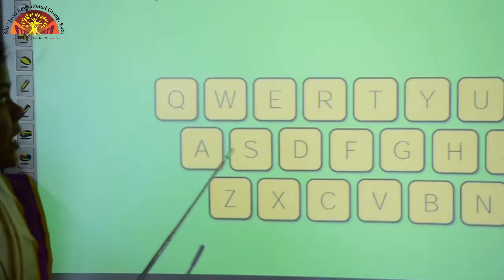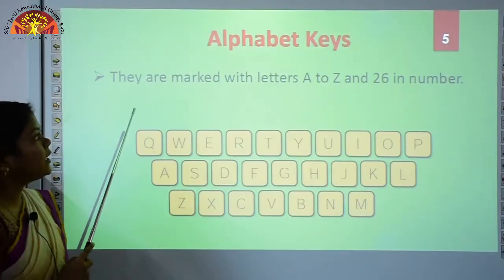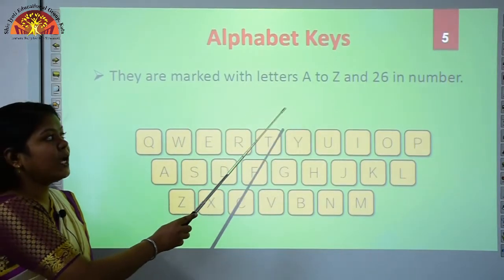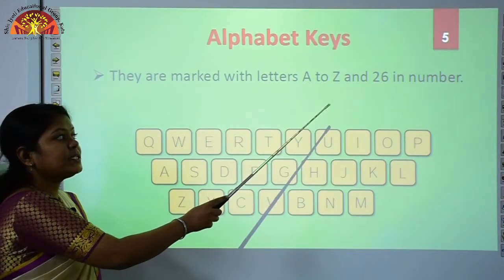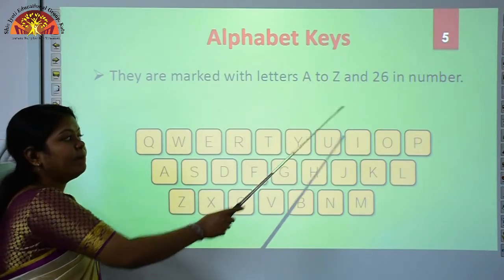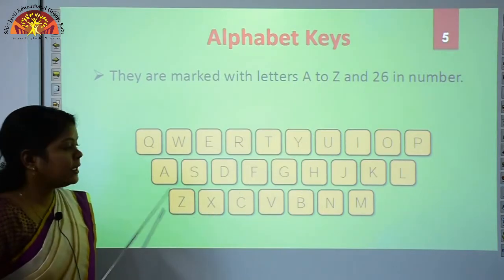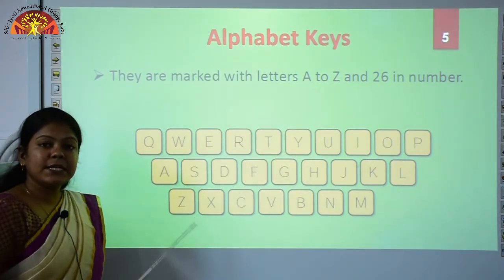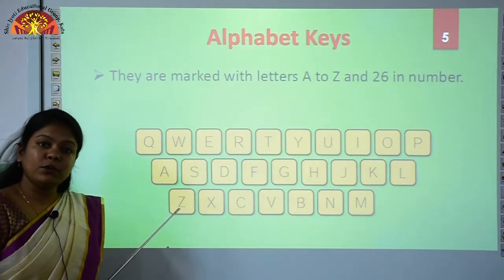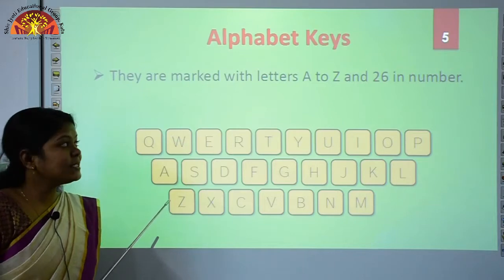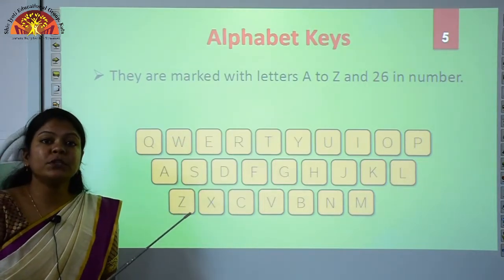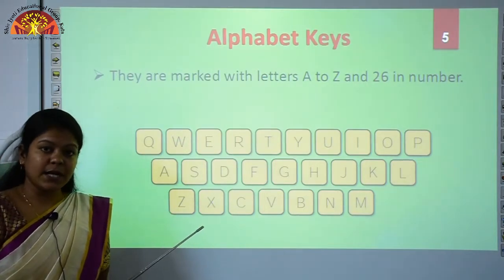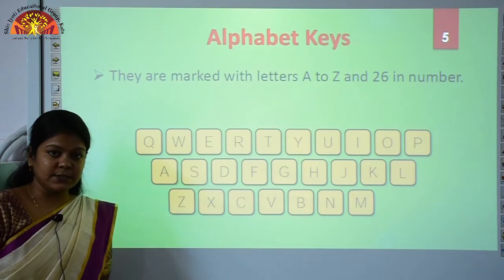Next, we have alphabet keys. They are marked with letters A to Z and are 26 in number. You can see these are the alphabet keys present on your keyboard. These keys are used to input words, letters, and sentences.